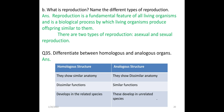What is reproduction? Name the different types of reproduction. Reproduction is the fundamental feature of all living organisms and is a biological process by which living organisms produce offspring similar to themselves. There are two types of reproduction: asexual and sexual reproduction.